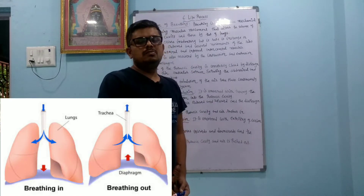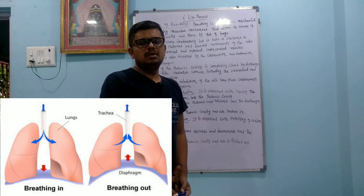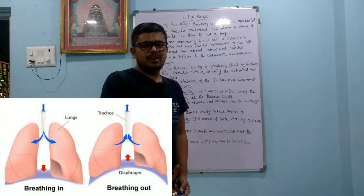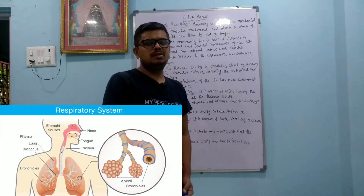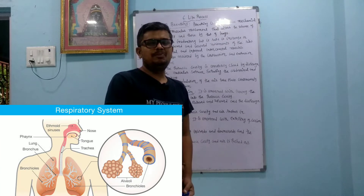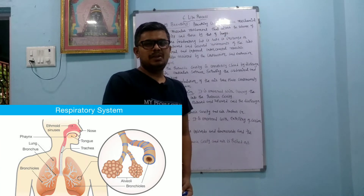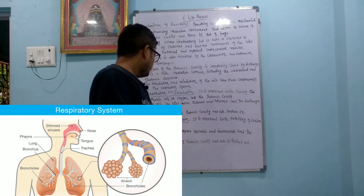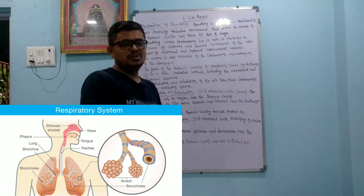In the Mechanism of Breathing, two things are important. One is the thoracic cavity, which is called the chest cavity. The second thing is the diaphragm, which is most important. Because of these, in the lungs, in the alveoli, the exchange of oxygen and carbon dioxide takes place, and this is why inhalation and exhalation occur in the body.